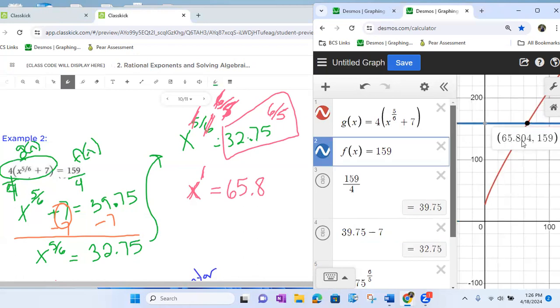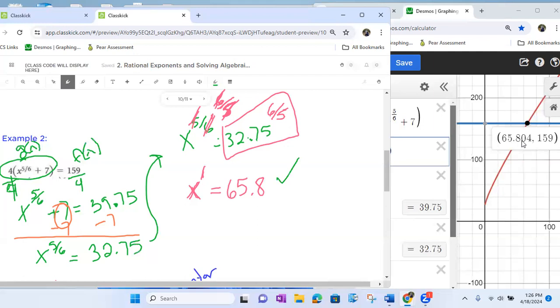We should get some of them pretty close. So 65.8 and we got 65.8. Man, that is beautiful to see all that algebra. And then to verify it through graphing. Amen.